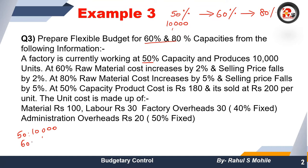At 60% capacity, that cross multiplication gives us 12,000 units. Similarly, at 80% capacity we will be manufacturing 16,000 units. The adjustments are: at 60% capacity, raw material cost increases by 2% and selling price falls by 2%; at 80% capacity, raw material cost increases by 5% and selling price falls by 5%.